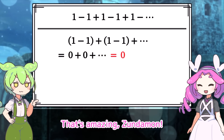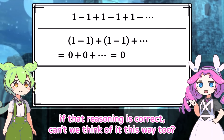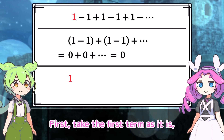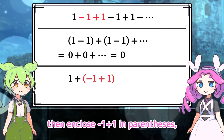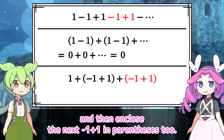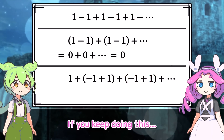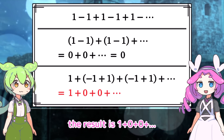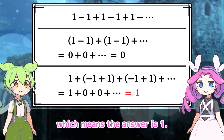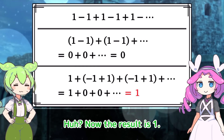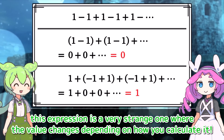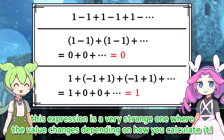That's amazing, Zundemon. But actually, if that reasoning is correct, can't we think of it this way too? First take the first term as it is, then enclose negative 1 plus 1 in parentheses, and then enclose the next negative 1 plus 1 in parentheses too. If you keep doing this, the result is 1 plus 0 plus 0 plus and so on, which means the answer is 1. Now the result is 1, but earlier it was 0, so this expression is a very strange one where the value changes depending on how you calculate it.